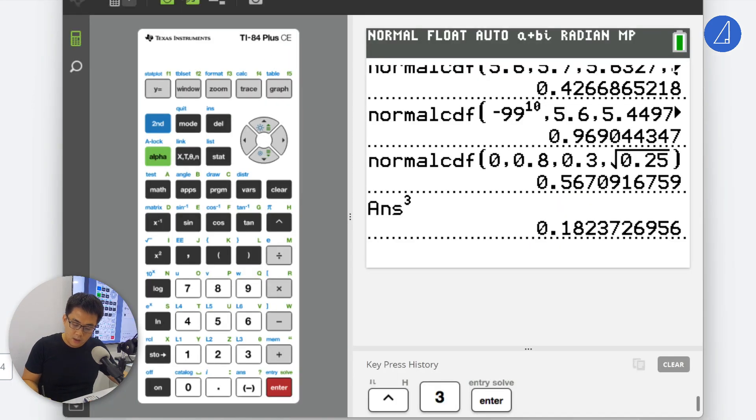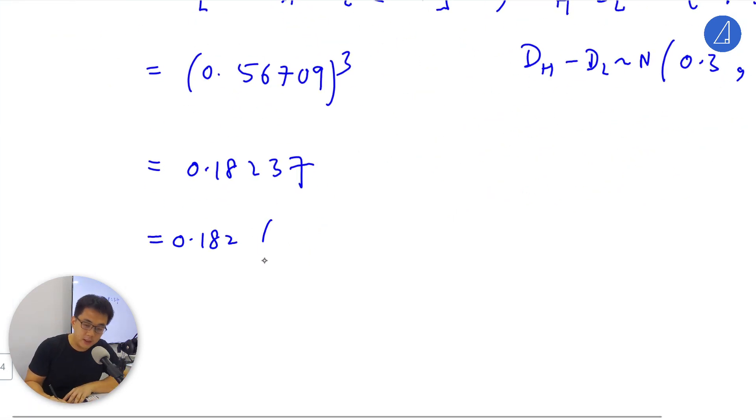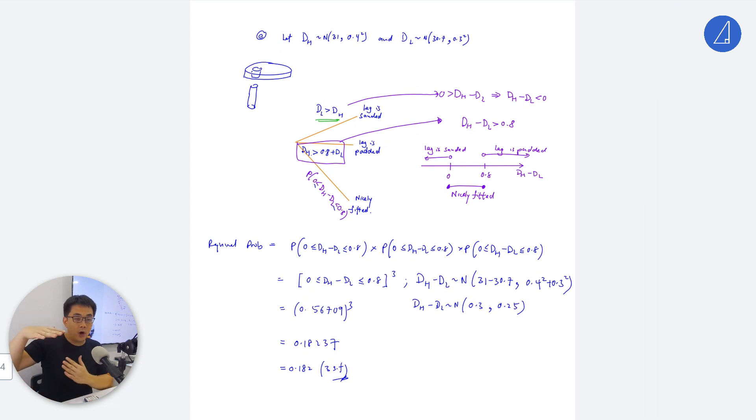The answer is 0.182 to 3 significant figures. What does this mean? If I have an assembly line with a drilled seat and three legs, out of 100 seats, I can expect 18 seats can be fitted nicely with all three legs. You will have 18 seats which will fit nicely without needing to drill or pad. The rest will probably have one leg needed to be padded or one leg needs to be sanded down.